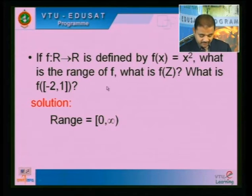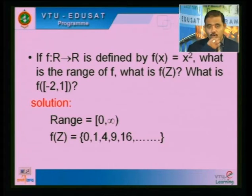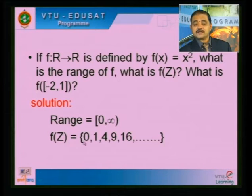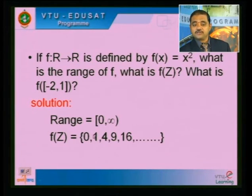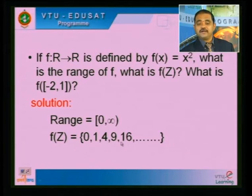F(Z) will be {0, 1, 4, 9, 16, ...} — all perfect squares. Note that between 0 and 1 you can also have 1/4 (since for x = 1/2, F(1/2) = 1/4). So all squares appear — 0, 1, 4, 9, 16, etc.